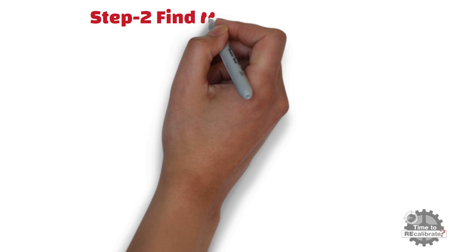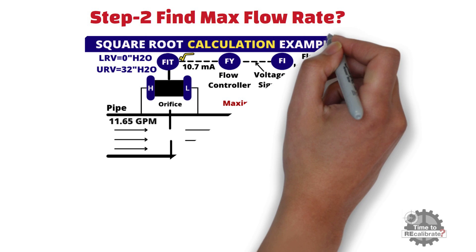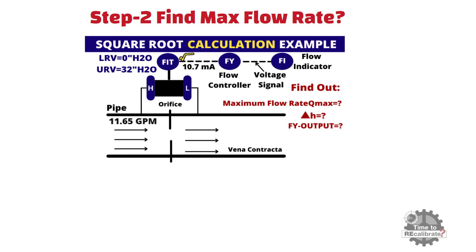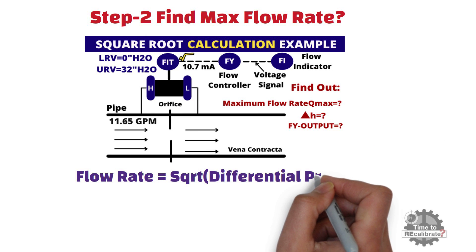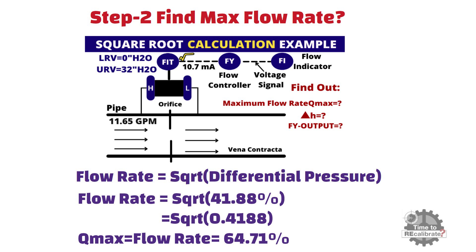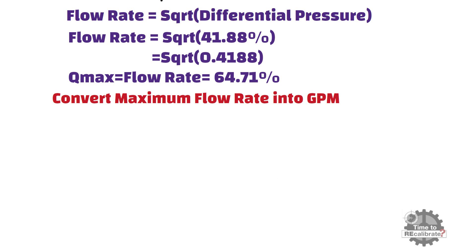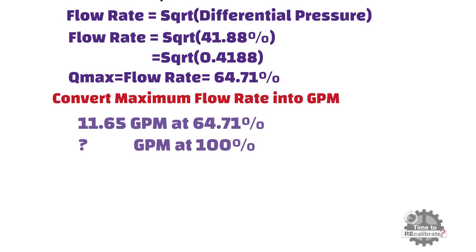Step number 2: Find maximum flow rate. As we know, flow rate is directly proportional to the square root of differential pressure. Put 41.88% into this equation and take the square root of this value — you will get 64.71%. This is the maximum flow rate in percentage. Now convert this maximum flow rate into GPM. When you put the values into the equation, you will get 18 GPM as the maximum flow value.